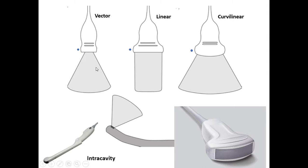On the control panel of the machine, there are two options — depth and width — and with those we can change the size of the sector: make it longer or shorter with depth, or wider or narrower with width. The vector probe has a smaller footprint, so we usually use it for echo or studies that need a small window, like the intercostal space for the spleen or liver, and for transcranial studies. The linear probe is usually used for small parts, superficial structures, musculoskeletal, and vascular studies. The curvilinear probe is used for other studies like abdomen, OB/GYN, and so on.